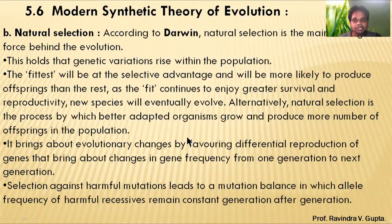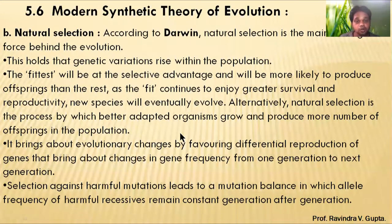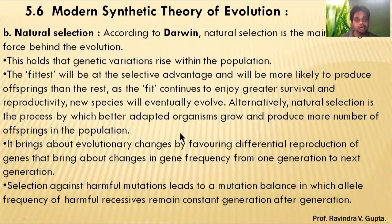Alternatively, natural selection is a process by which better-adapted organisms grow and produce a greater number of offspring in the population. All the changes in the body mean organisms are better adapted, they grow, and more offspring are produced from the population, so the new organism will increase.